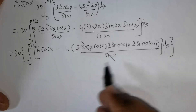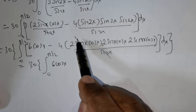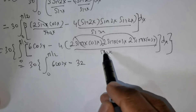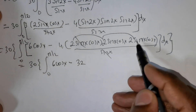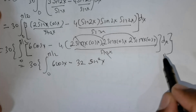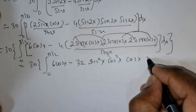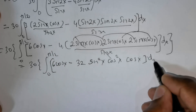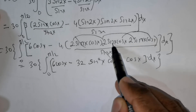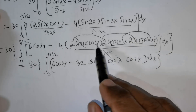This can be further rewritten as 30 times integral from 0 to pi over 2 of 6 cos x minus 32 times sin squared x times cos squared x times cos x. Here 2 times 2 is 4, 4 times 2 is 8, and 8 times 4 is 32. The two sin x terms give sin squared x, and the two cos x terms give cos squared x, retaining one cos x as is.